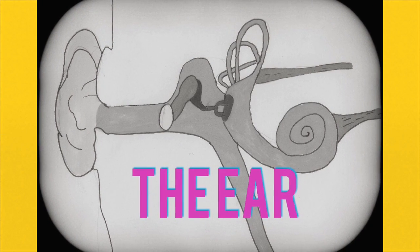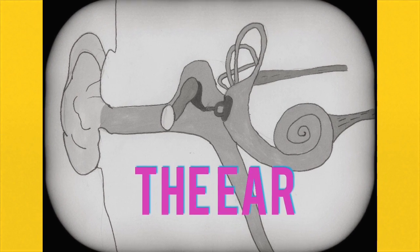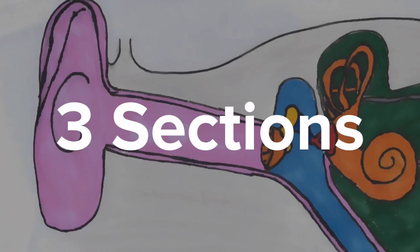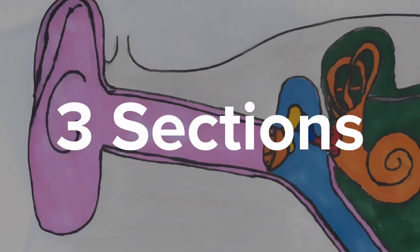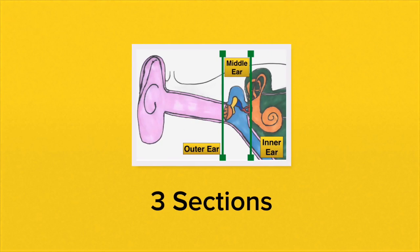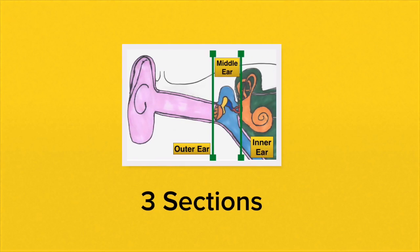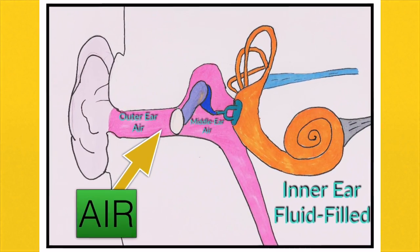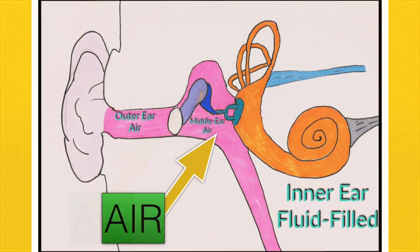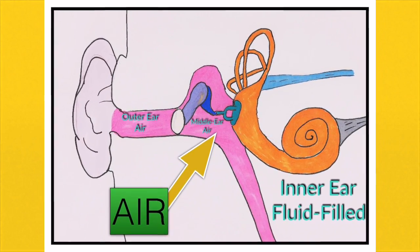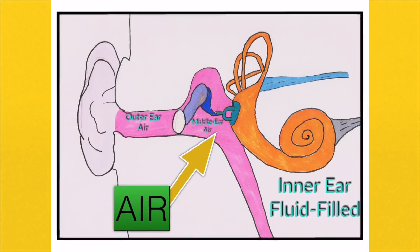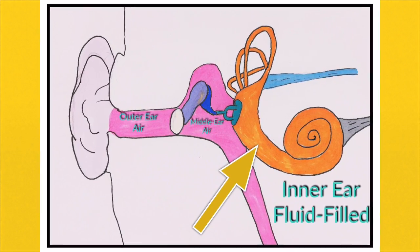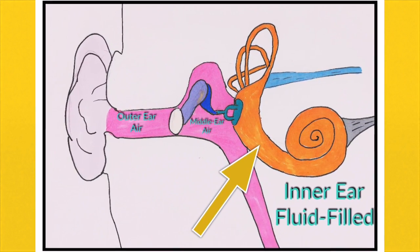Let's cover the ear, hearing and balance. The ear is divided into three sections: the outer ear, the middle ear and the inner ear. The outer ear and the middle ear are both filled with air, whereas in contrast the inner ear is fluid filled — it contains liquid.